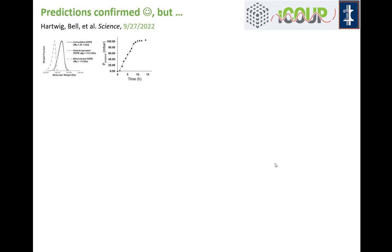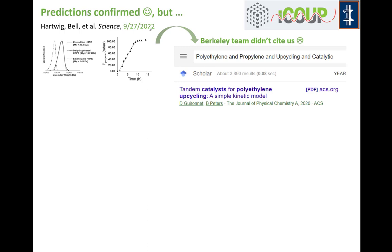In September of 2022, Hartwig's group along with Alex Bell published this paper in Science Magazine. You see molecular weight distributions that look a lot like what we predicted. You see the production rate of propylene — they're seeing an increasing amount of propylene produced and then a flat line corresponding to the cessation of propylene production. More or less the same kind of behavior that was predicted in the theoretical paper. The theory was two years ahead of the experiments in this case.